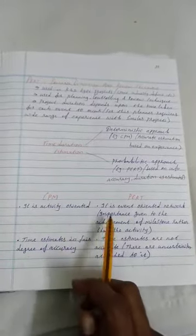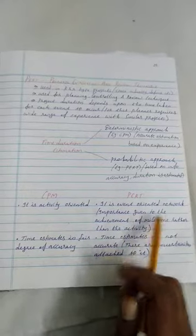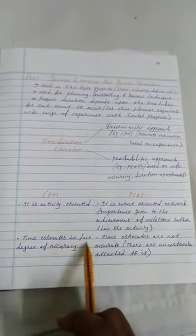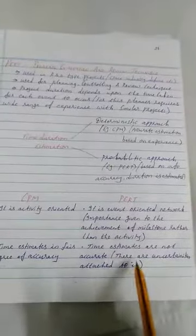Now we compare what is the difference between CPM and PERT. CPM is activity-oriented. PERT is event-oriented network. Time estimate in fair degree of accuracy. In PERT, the time estimates are not accurate here.